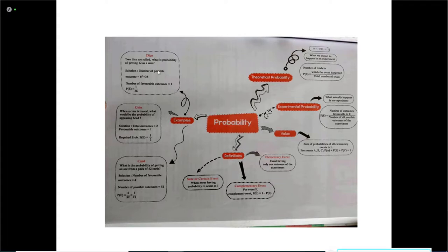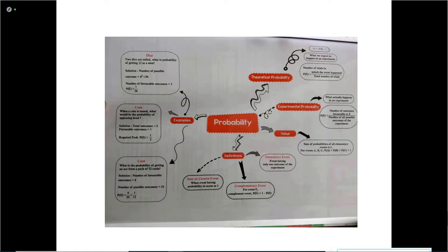Most questions will be of 3 categories: first category on dice, second on coin, and third on cards, though there are many other topics as well. A dice has 6 faces marked as 1, 2, 3, 4, 5, and 6. A coin has 2 faces: head and tail. Playing cards have 52 cards in 4 different suits.